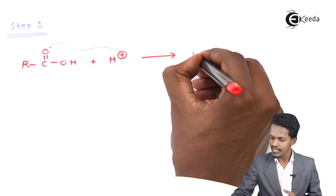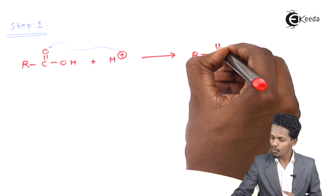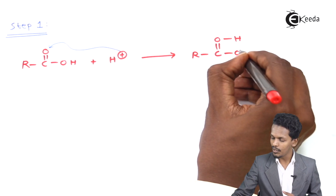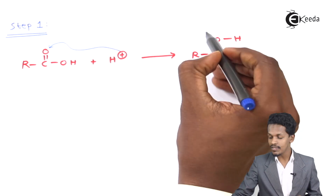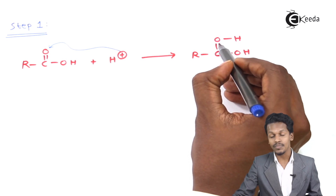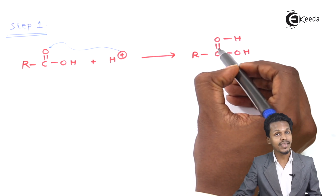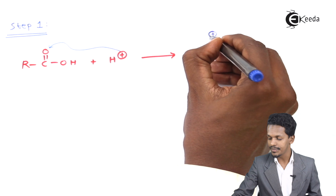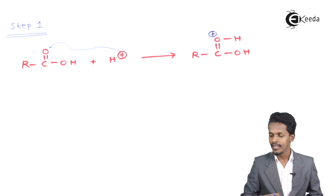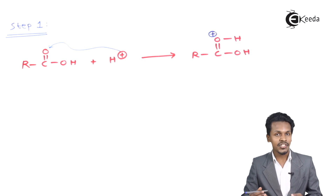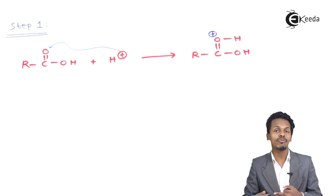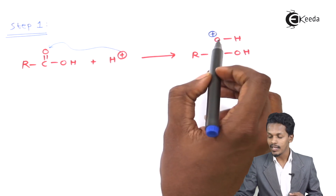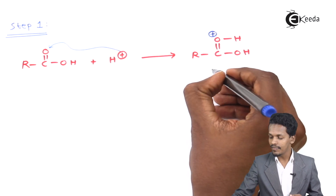The product of this H⁺ attack is RC(=O⁺H)OH, where the oxygen now has three valencies, indicating a positive charge on it. This species is very unstable, so we need to introduce a molecule to stabilize it.